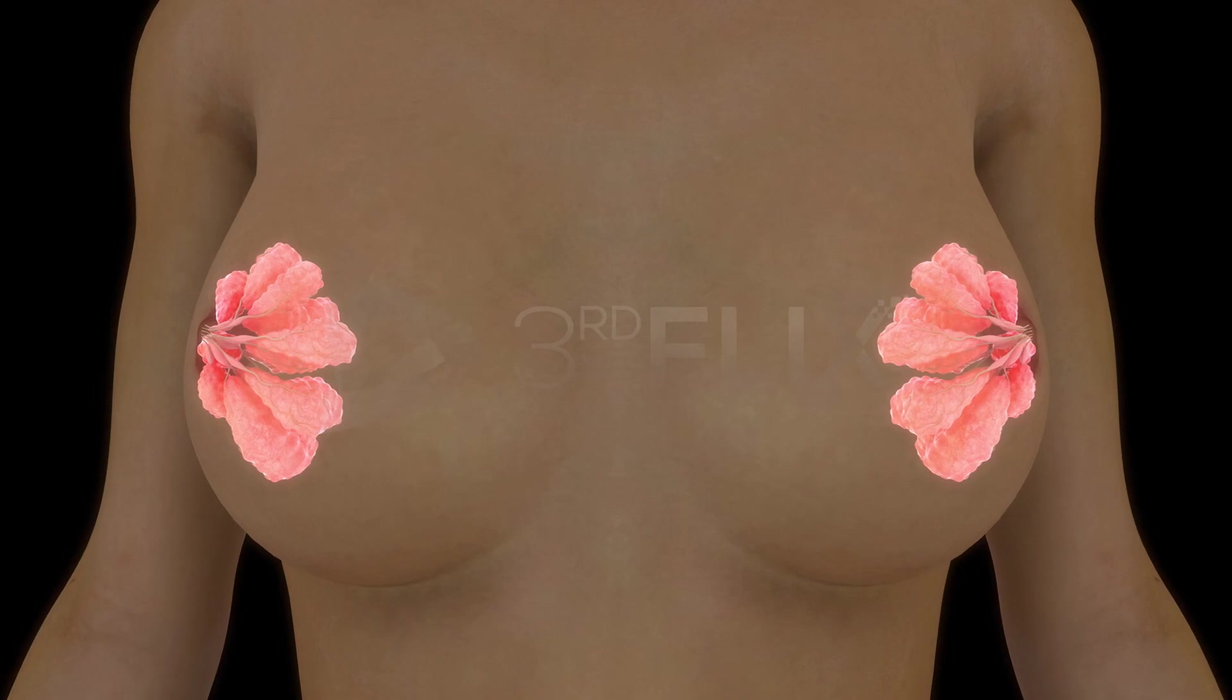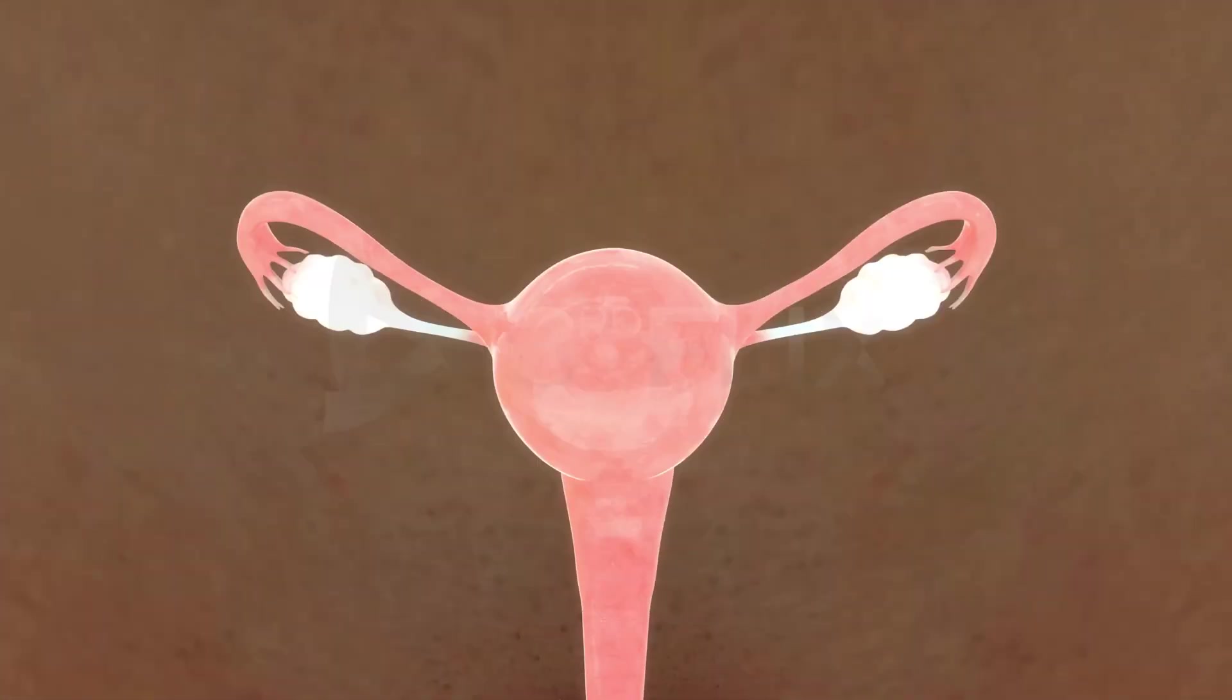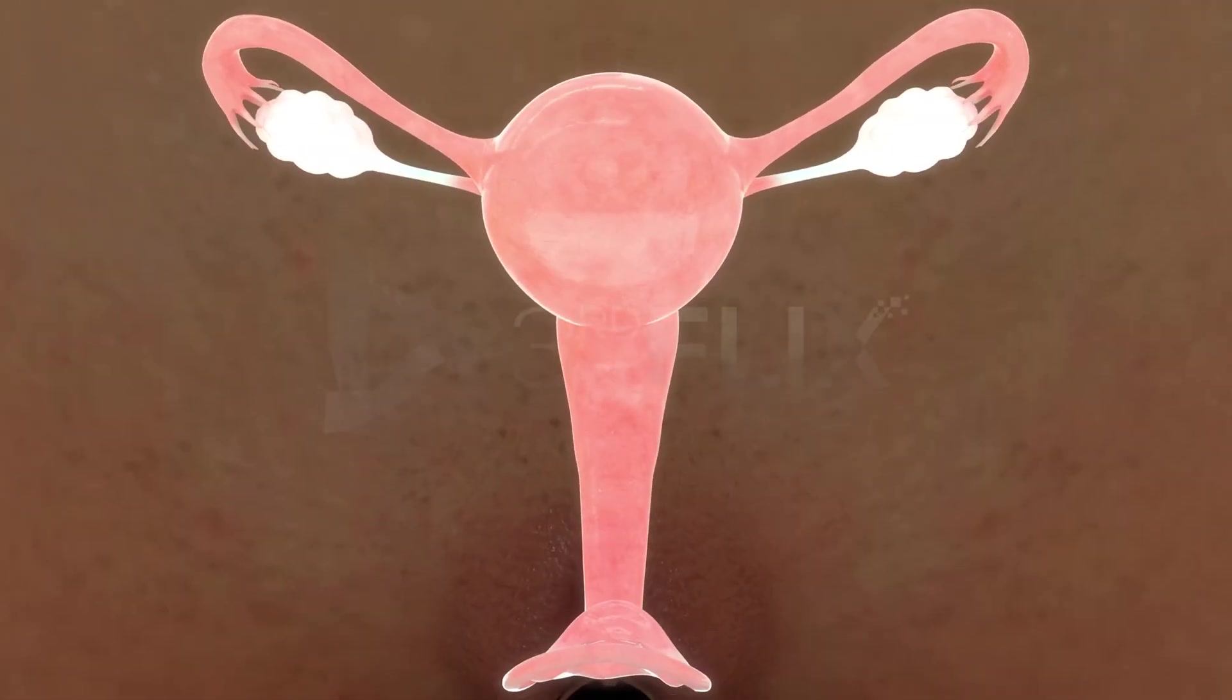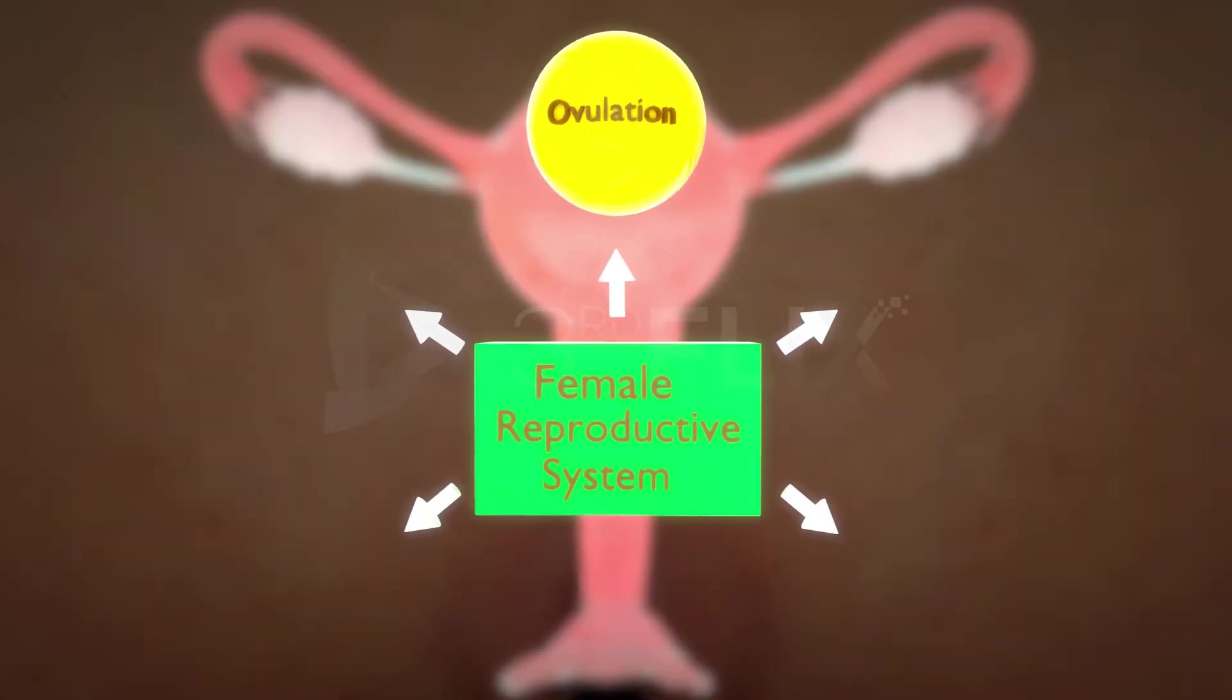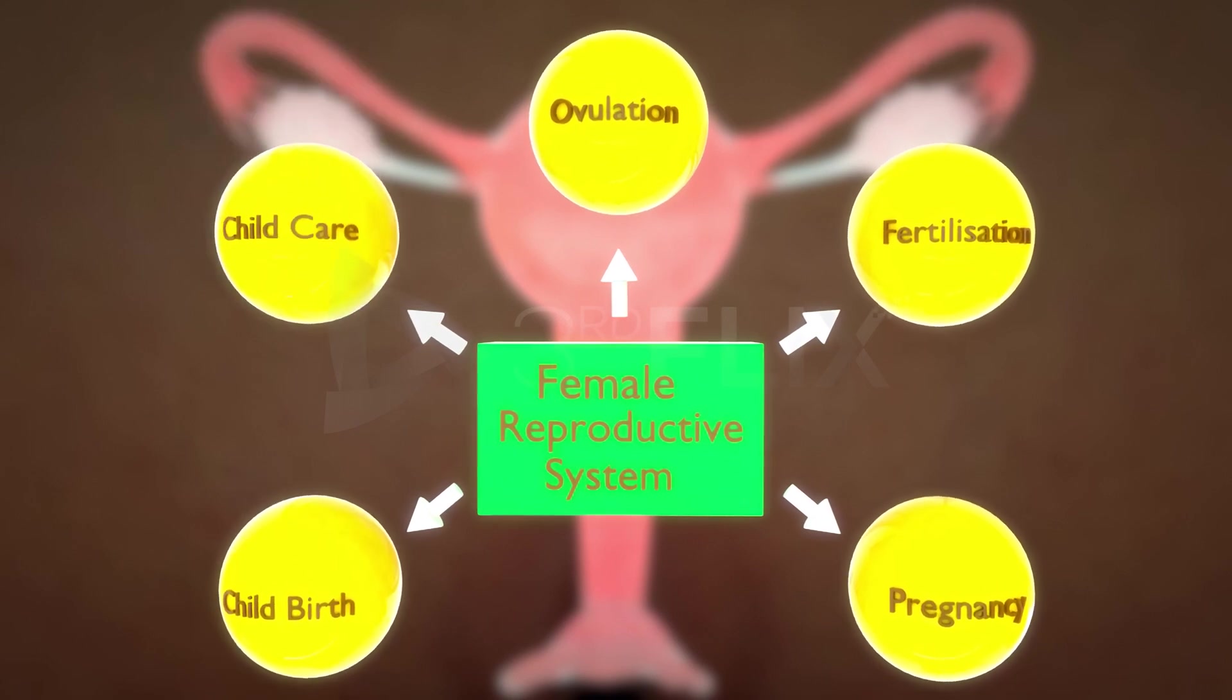These structures, along with the pair of mammary glands, are structurally and functionally integrated to support the processes of ovulation, fertilization, pregnancy, childbirth, and child care.